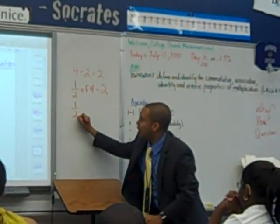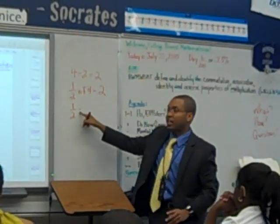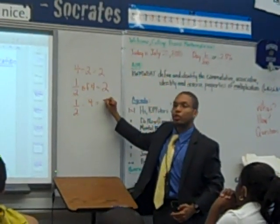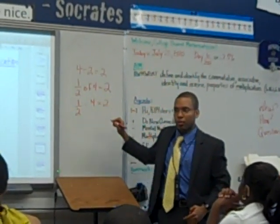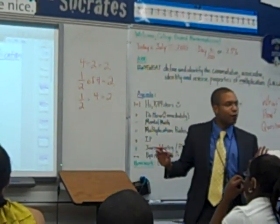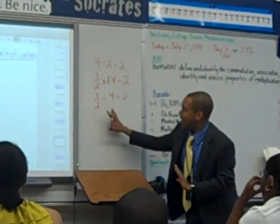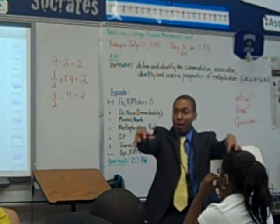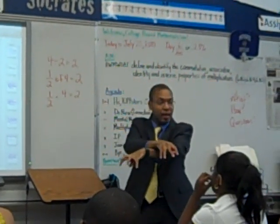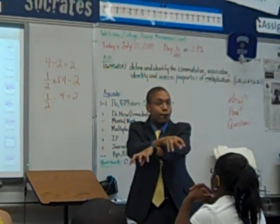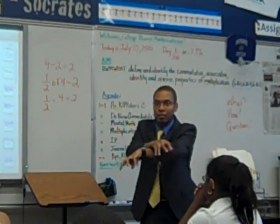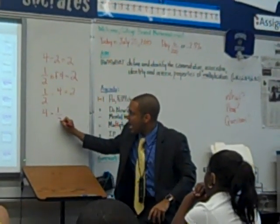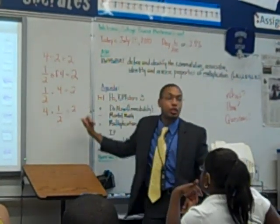So now I'm going to write: half of — and 'of' is another sign for multiplication — 4 equals 2. You agree with me so far? Now I'm multiplying. Can I use the commutative property and simply switch the order of one-half and four? Can I say four times one-half? And is that still equal to 2? Sure.